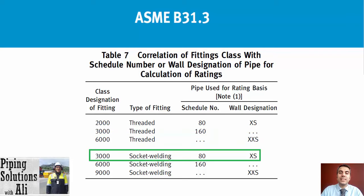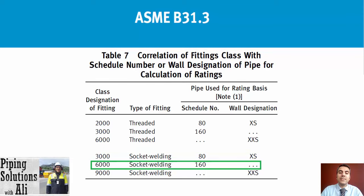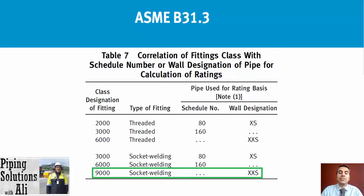For socket weld forged fittings: for pipe with thickness equal to Schedule 80 (or equivalent wall designation Extra Strong) or less, the class is 3000. For pipe with thickness greater than Schedule 80 up to Schedule 160, the class is 6000.